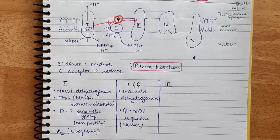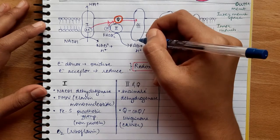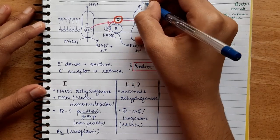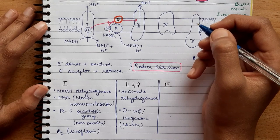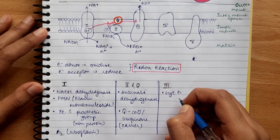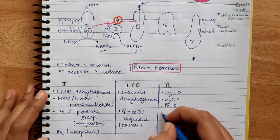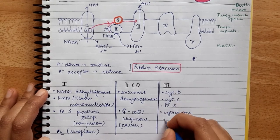Ubiquinone now carries electrons from both Complex 1 and Complex 2 and donates them to Complex 3. Complex 3 pumps 4 H⁺ ions from the matrix into the inter-membrane space. Complex 3 contains Cytochrome B, Cytochrome C, and an Iron-Sulphur group, and is also known as Cytochrome BC1 oxidoreductase.